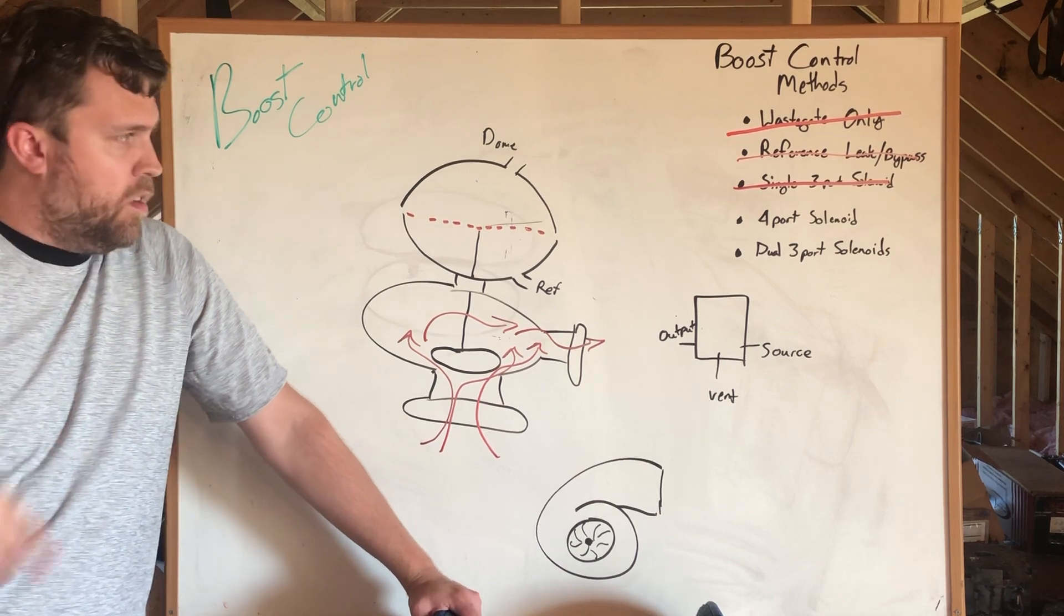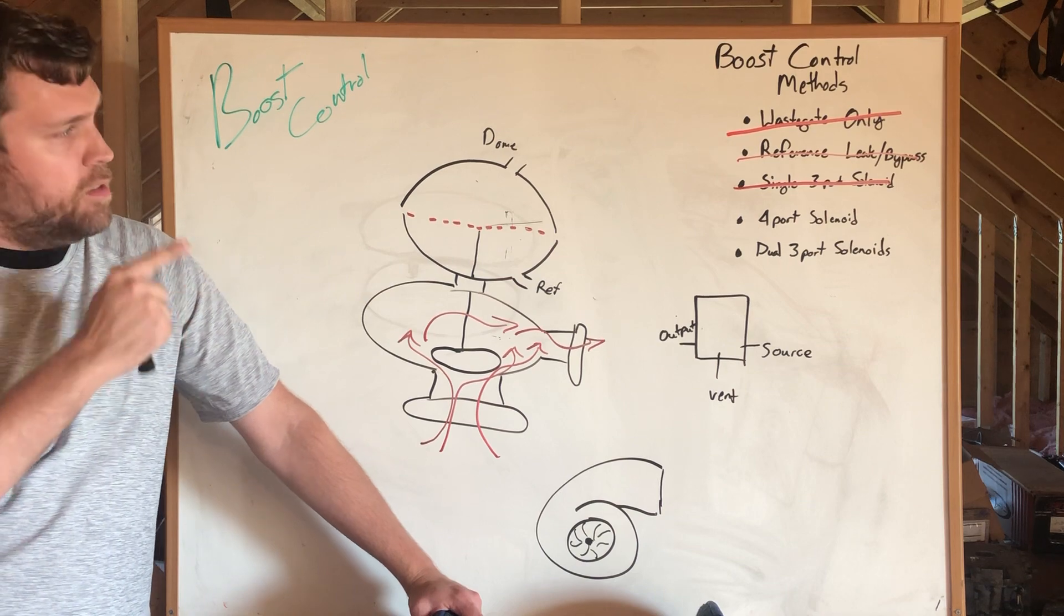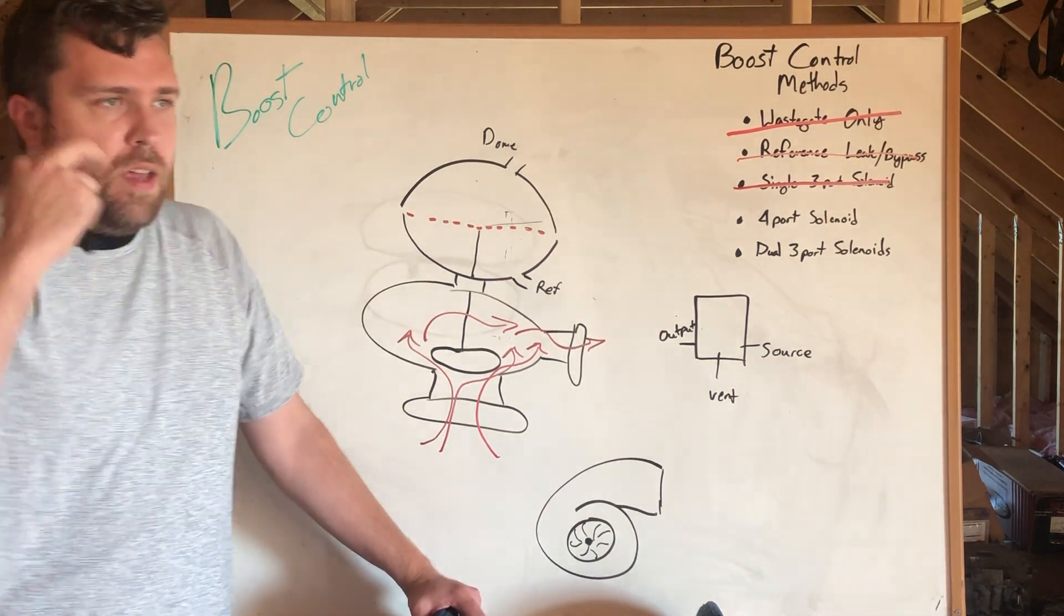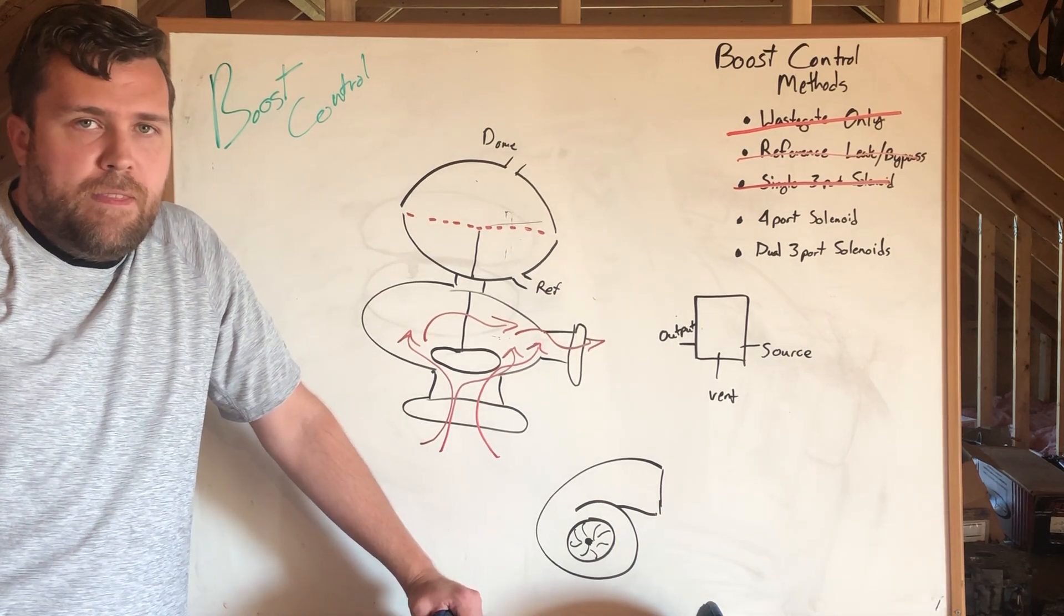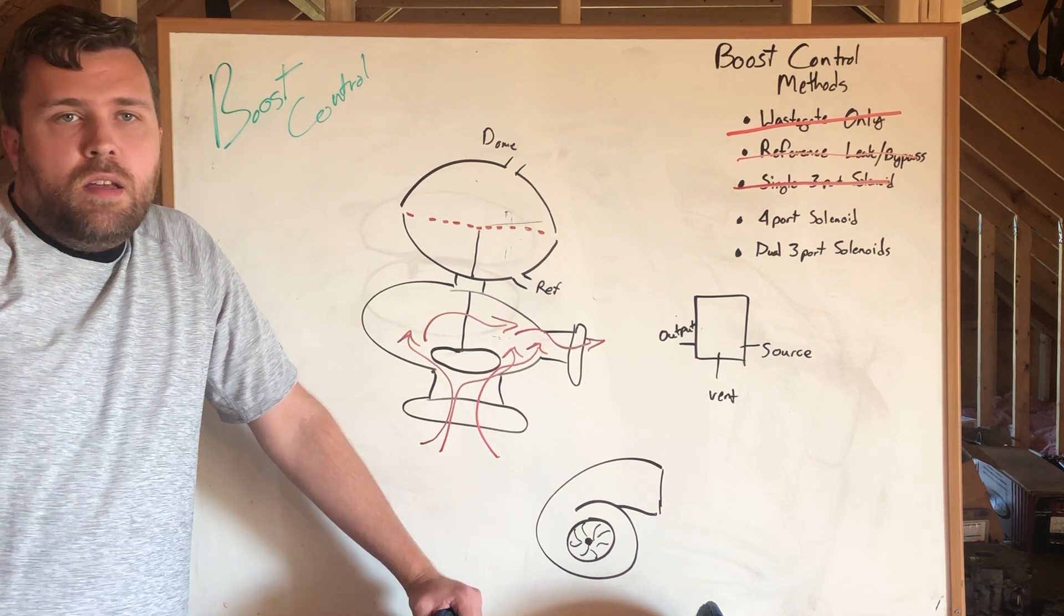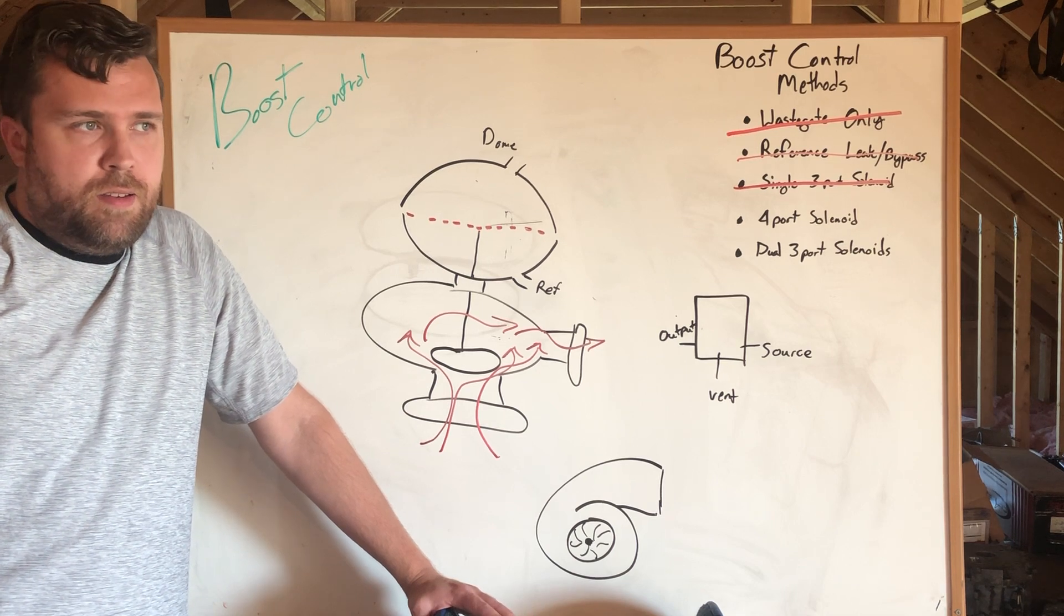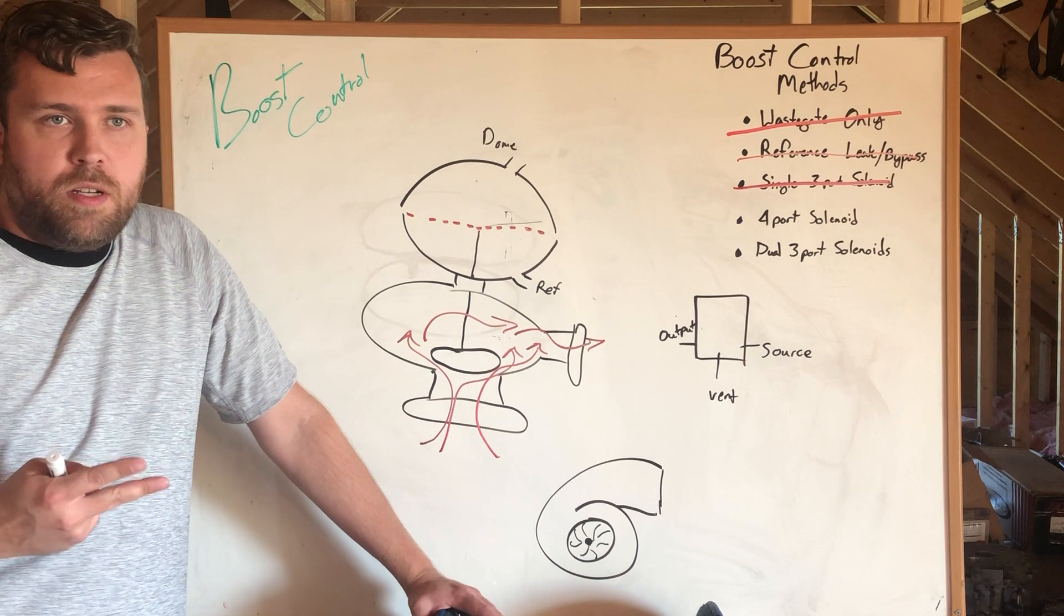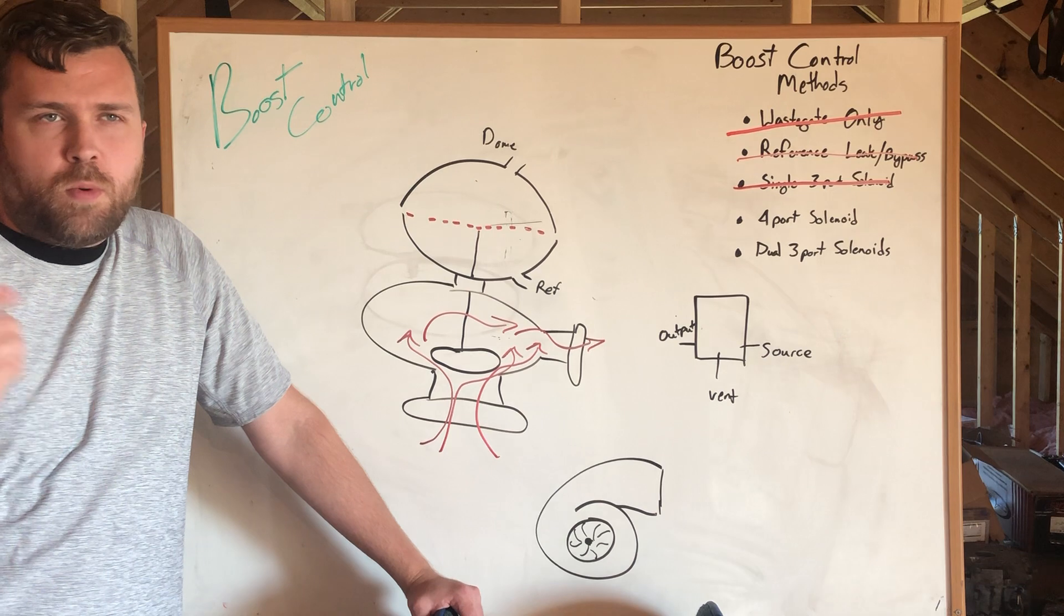All right, so we've covered wastegate, we've covered reference leak bypass, now let's knock out the single three-port. This is probably my favorite and the reason it's my favorite is it's the simplest way that we can let the ECU actually control how much boost that the engine is gonna make. The thing about a single three-port is it's easily used in either a closed loop or an open loop situation and I'm gonna do a video on open versus closed loop shortly.